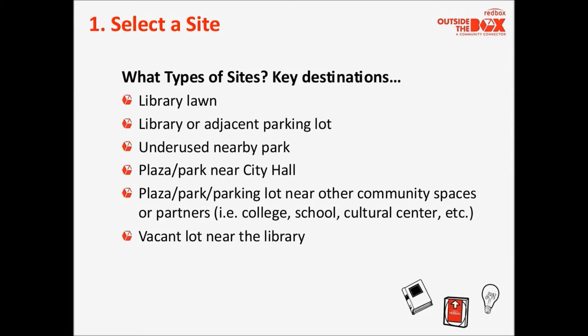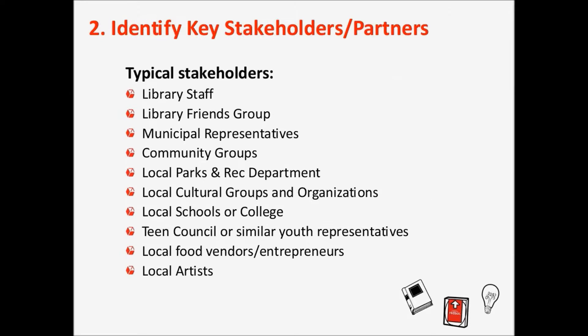Identifying key stakeholders and partners is one of the most important steps in the placemaking or brainstorming process, because we want to have the right people at the meeting. We want to start with library staff, but we also want to get library clients involved, library friends groups, teen councils or other youth representatives. We definitely want to involve someone from the municipality or City Hall, and representatives of existing community groups. If the space is a park, the local parks department should probably be involved.